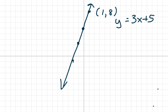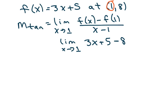So we're going to get all over x minus 1. Clean this up again. That's 3x minus 3 over x minus 1.